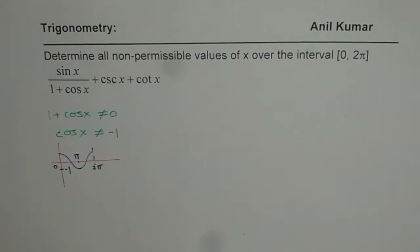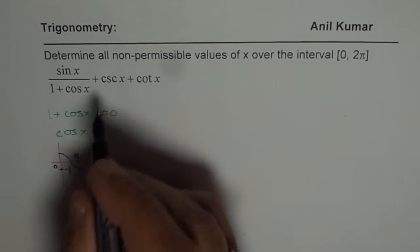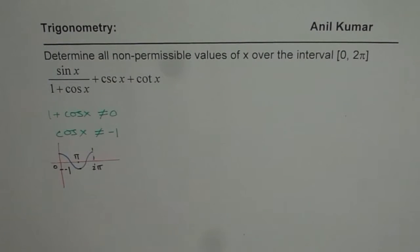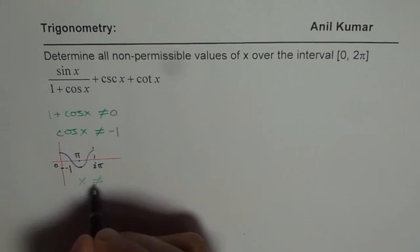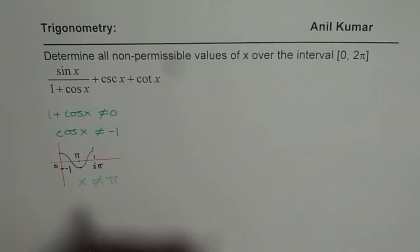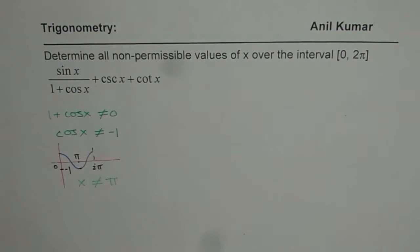So cos of π is minus 1 and therefore one restriction we get from this particular equation is that x is not equal to π. So within this domain, there is a restriction on cosine.